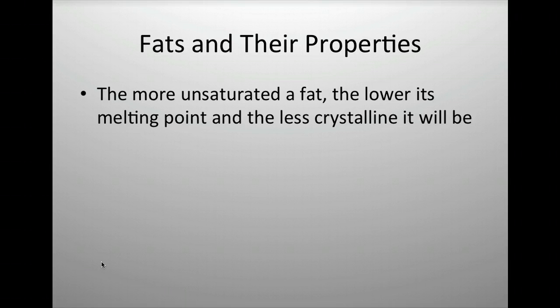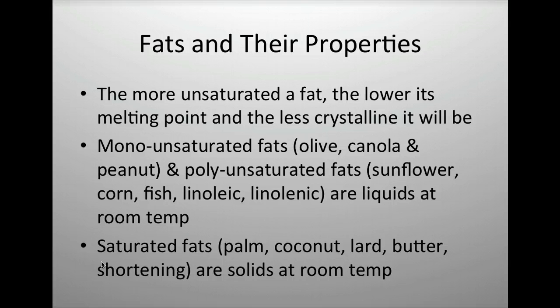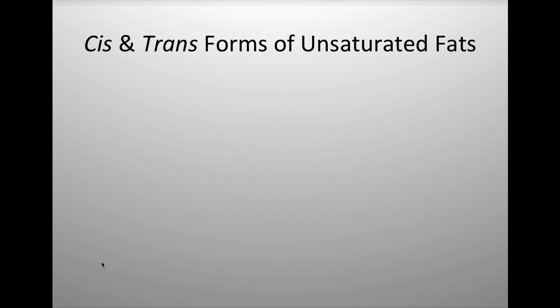If you have a highly unsaturated fat with more double bonds, the less solid it will be. Monounsaturated fats include things like olive oil and canola oil. Polyunsaturated fats include sunflower oil, corn oil, and fish oil. Saturated fats are solid at room temperature — examples include butter, lard, coconut oil, and shortening.